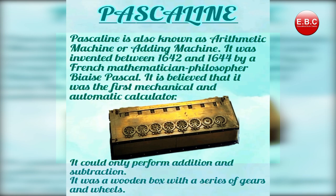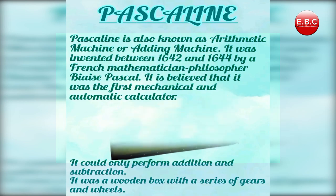Pascaline ko 1642 mein French mathematician Blaise Pascal ke through invent kiya gaya tha. Starting mein ise arithmetic machine ke naam se bhi jaana jata tha. Yeh digits ko speed se plus minus kar sakta tha — baar baar plus or minus ko iske through multiply or divide bhi kiya jata tha. Pascaline mein gears or wheels ki ek series hoti thi, aur har wheel par 0 se 9 tak digits represent hote the. Wheels ko ghumane par hi calculations ki ja sakti thi. Yeh duniya ka pehla mechanical calculator tha jisse calculations aur zyada easy honge.